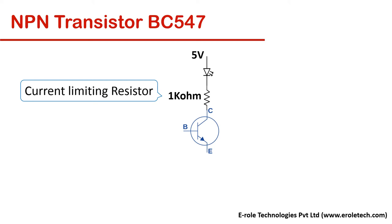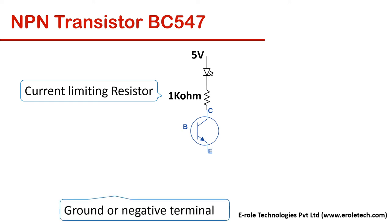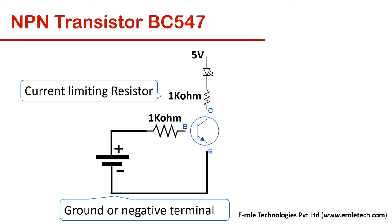The LED will not glow unless its cathode gets the ground signal. When the transistor turns on, the LED gets the ground. We give supply to the base terminal; when the voltage at the base terminal becomes more than 0.7V, the transistor turns on. It then allows current to pass from collector to emitter, and the LED will glow. When base voltage goes below 0.7V, the LED will turn off.